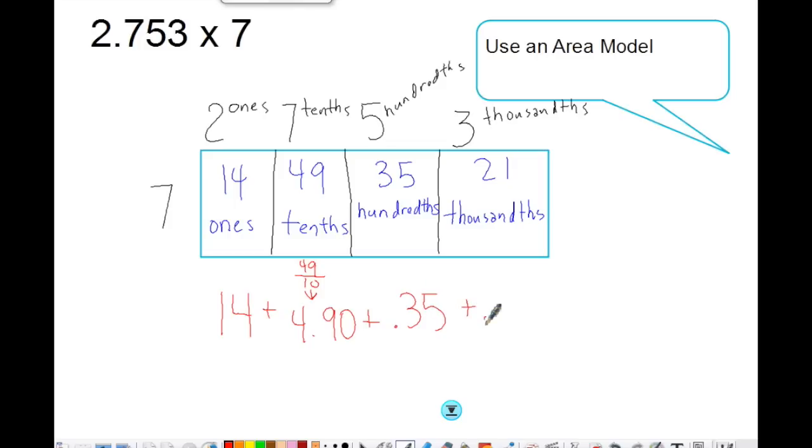Last but not least, twenty-one thousandths is point zero two one. Go ahead and add all of these numbers: fourteen plus four point nine zero plus point three five plus point zero two one. When I line up my numbers, make sure that you're lining them up by decimal. I really am a strong believer in including place value so that they can help you line up your numerals and decimals. I would highly recommend you do that.